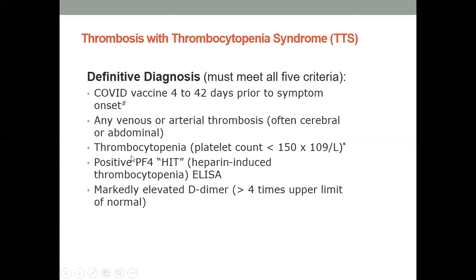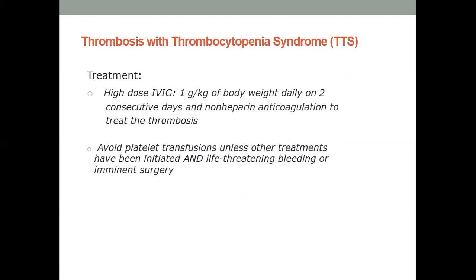Thrombocytopenia and markedly elevated D-dimer are hallmarks that persist in most patients. Treatment involves IV immunoglobulin given the immune-mediated nature of the condition, and for confirmed thrombosis, non-heparin anticoagulants should be used. This condition closely resembles heparin-induced thrombocytopenia (HIT), with similar pathophysiology of antibody elaboration and thrombotic manifestation. Platelet transfusion should be avoided due to anticipated increased thrombosis risk unless there is a compelling indication.